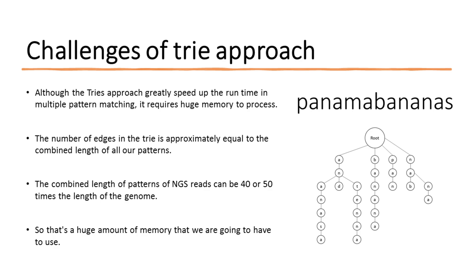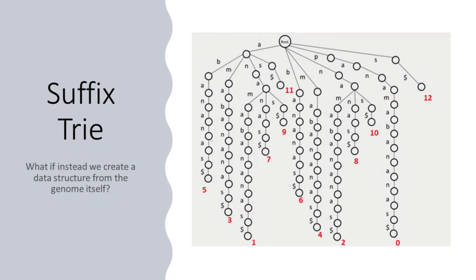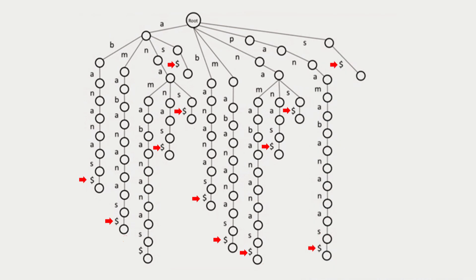Rather than processing the patterns or reads into a data structure, can we flip this around and process the genome into a data structure? If this data structure uses only the length of the genome, that would be a huge memory reduction. What we are going to do is use all suffixes of the genome. Consider the hypothetical genome 'panamabananas.' To form the suffix trie, we add a dollar sign to denote the end of the string. Instead of placing the trie at each position of the genome, we take each pattern and see if we can spell it out from the root downward in the suffix trie.